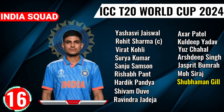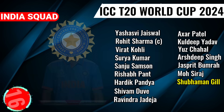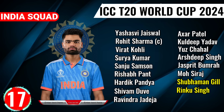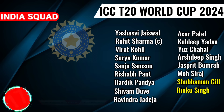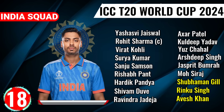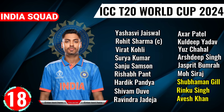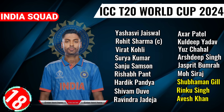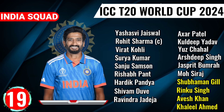Number 16: Shubman Gill, right-hand batsman. Number 17: Rinku Singh, left-hand batsman. Number 18: Avesh Khan, right-hand fast bowler. Number 19: Khalil Ahmad, left-arm fast bowler.